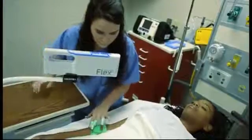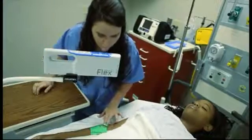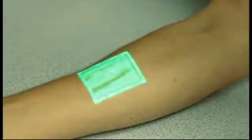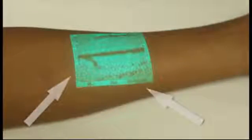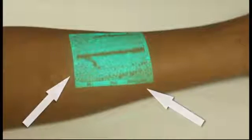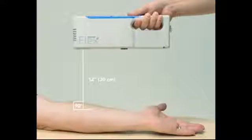To achieve proper focal distance for VainViewer Flex, hold the unit close to the surface of the skin and move the unit away until the border text around the image reading VainViewer and Christie becomes clear and legible. You should be at the proper focal distance of 12 inches or 30 centimeters.